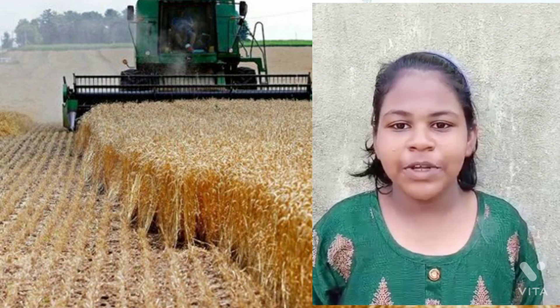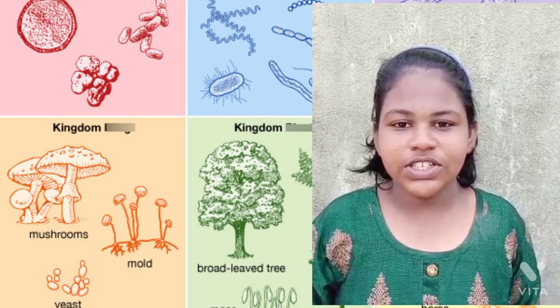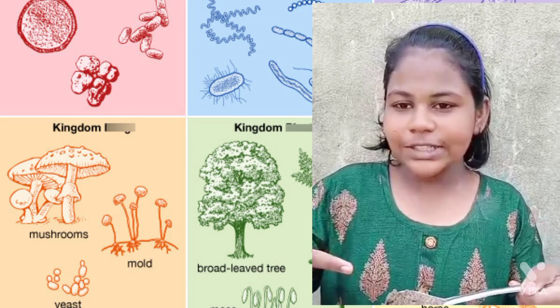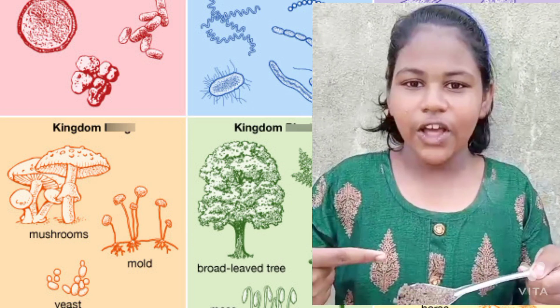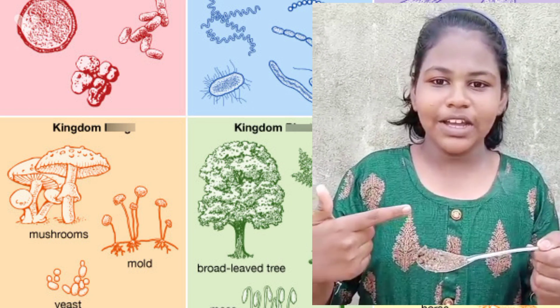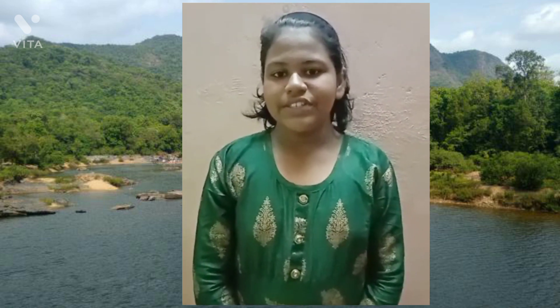Soils are habitats for beneficial soil microbes. According to USDA, one teaspoon of healthy soil contains 100 billion to 1 billion individual bacteria alone. Soils filter surface water of dust, chemicals and other contaminants. Soil helps regulate the earth's temperature.